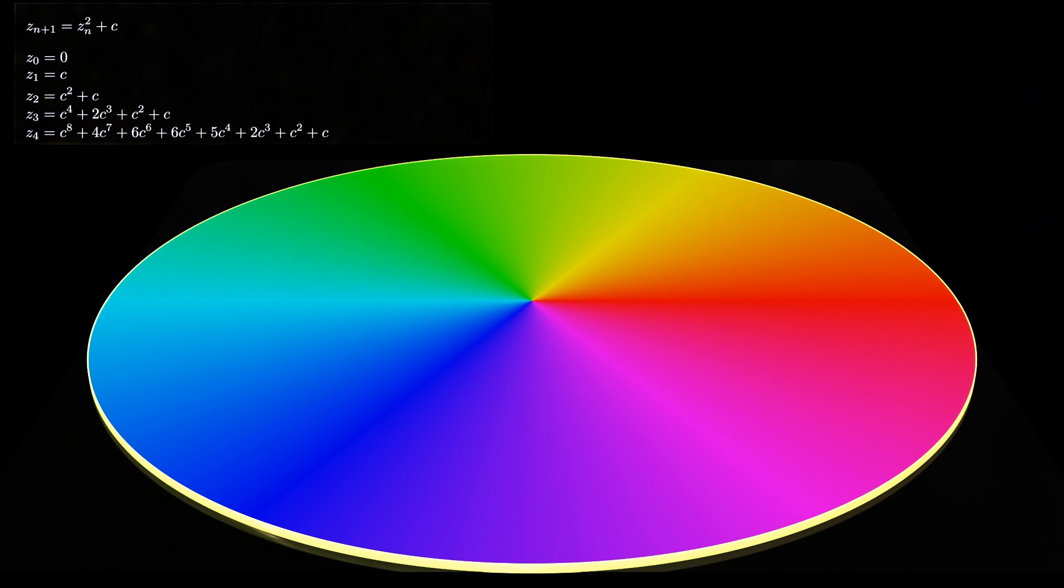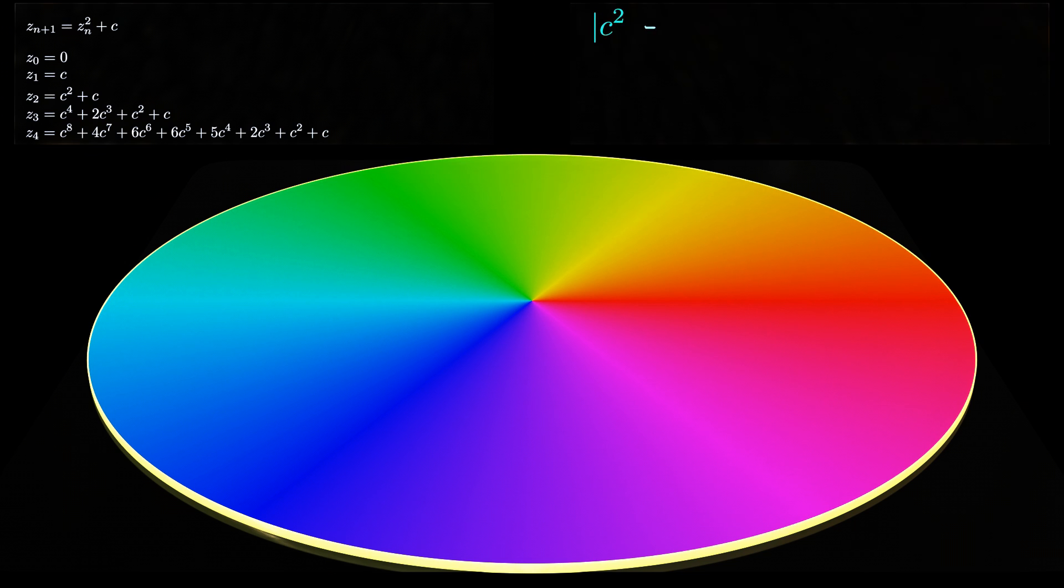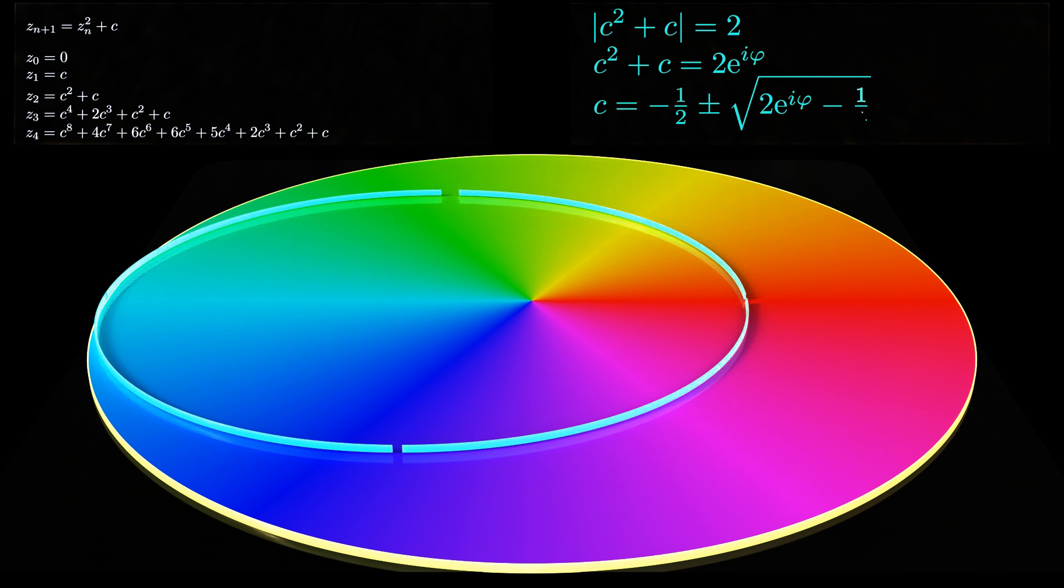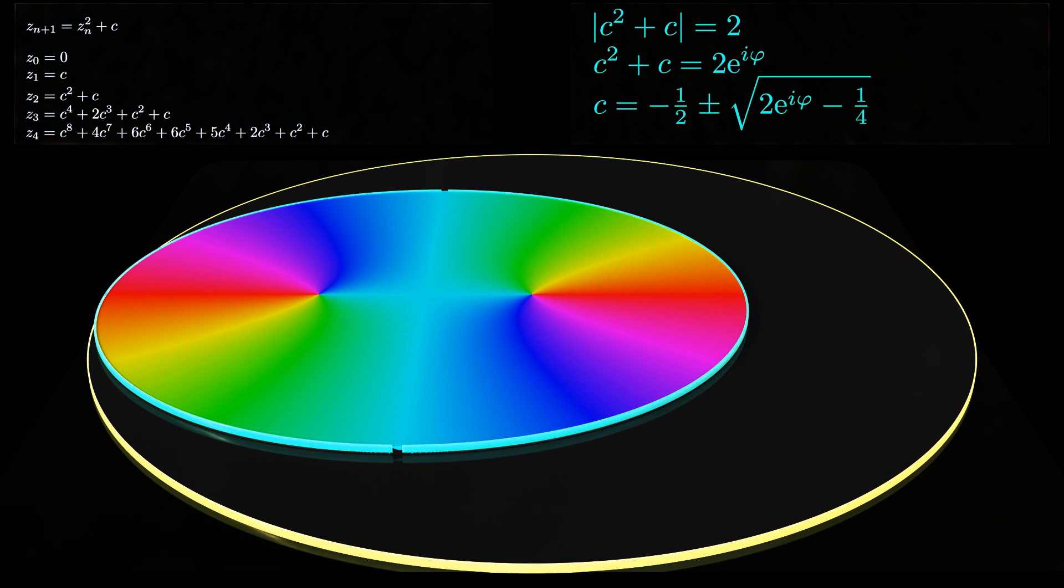For the second equation, we once again replace the absolute value with a phase, which allows us to solve the quadratic equation. The solution yields two branches and together these branches form the complete contour.